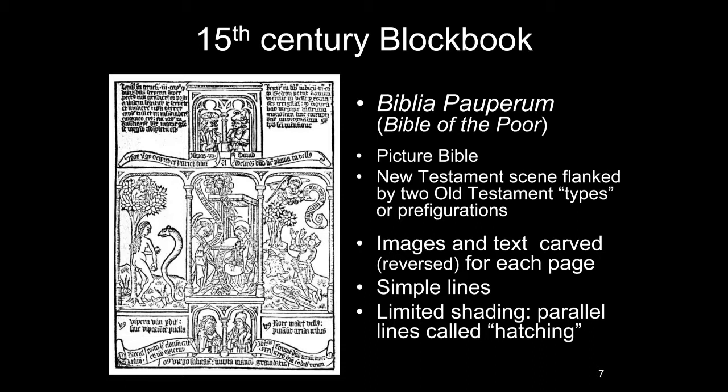This is a 15th century block book called the Biblia Pauperum, or the Bible of the Poor — essentially a picture Bible. It's not all the words of the Bible; it's essentially the New Testament scene in the middle, and then on either side you have two Old Testament types or prefigurations of that scene. As you can see there's also some text on the page, and remember both the images and the text would have to be carved out backwards for each page. The early prints are made with very simple lines — there's very little if any shading.